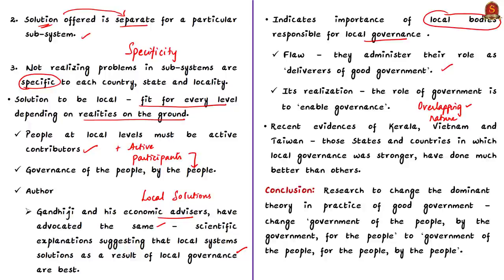Those who understood this realized that the role of government is to enable governance through people's active participation, not just to deliver governance. The author points to recent evidence from Kerala, and global examples like Vietnam and Taiwan, creating a hypothesis that states and countries with stronger local governance have done much better in dealing with the COVID-19 pandemic. Based on further research, the author aims to change the dominant theory from 'government of the people, by the government, for the people' to 'government of the people, for the people, by the people' — Abraham Lincoln's principle of democracy.